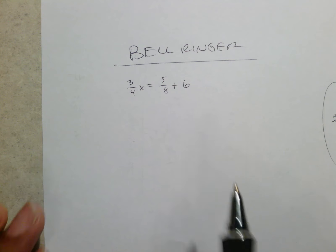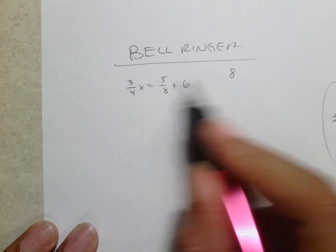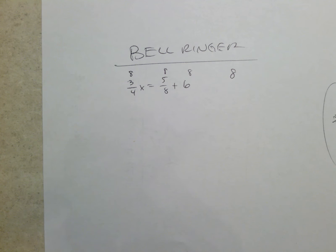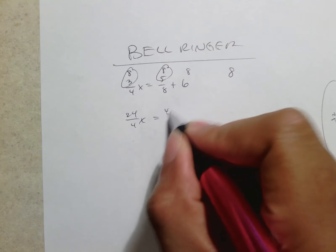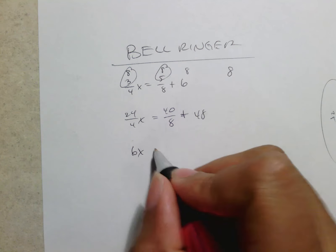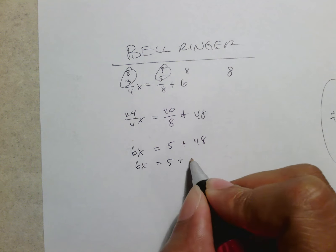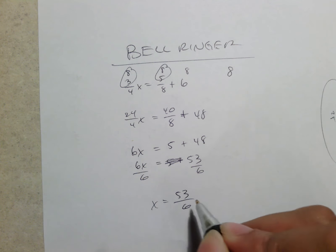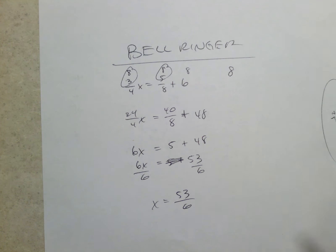Starting out with our bell ringer for the day. You could have picked a whole bunch of different numbers for this, but if you check it the way I say — putting down the bigger number first — 4 actually goes into 8, which means you could use 8 as your number. Some of you might have chose 16; that's fine. You end up with 24 over 4x, 40 over 8, and then 48. This turns into 6x equals 5 plus 48, which is 53. When you divide by 6, you get 53 over 6 as your answer.